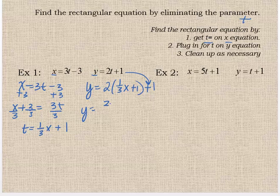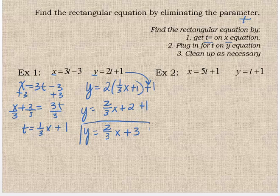So y equals 2 thirds x, 2 times 1 is 2, plus that outside 1. And then I clean it up, combine like terms. So y equals 2 thirds x plus 3. And there is my rectangular equation.